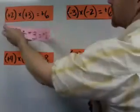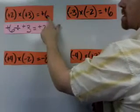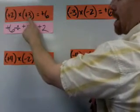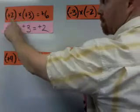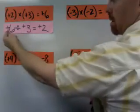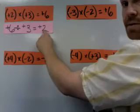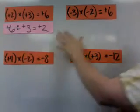And in this case, it would be 6 divided by positive 3 equals positive 2, like this. Positive 6 divided by positive 3 equals positive 2. You got me?